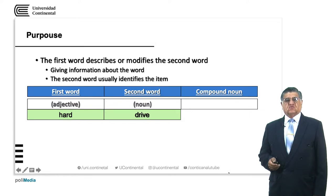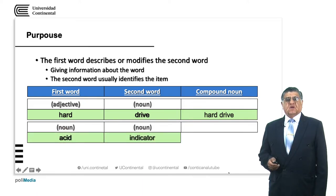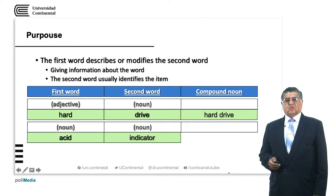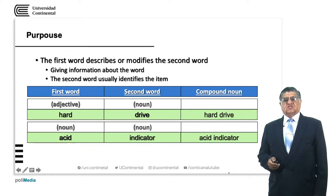For example, we have adjectives and nouns. We have 'hard' and 'drive' — hard describes solid, thin; drive is a device. We have 'hard drive'. As you know, it is one of the main components of a computer. We also have a noun and another noun: 'acid' and 'indicator'. Acid describes a chemical product; an indicator describes another type of chemical reagent. The compound noun is 'acid indicator' — a substance that indicates the change in the acid properties of a solution.